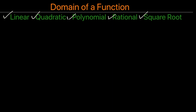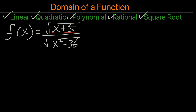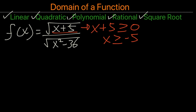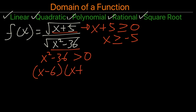Here's another example with a square root in both the numerator and the denominator. For the numerator, x plus 5 must be greater than or equal to 0, so x must be greater than or equal to negative 5. For the denominator, x squared minus 36 must be greater than 0, giving us x minus 6 times x plus 6, so x cannot be 6 and x cannot be negative 6.